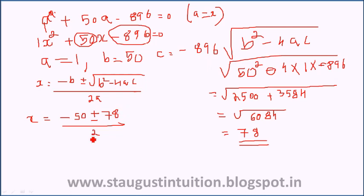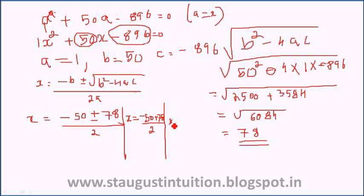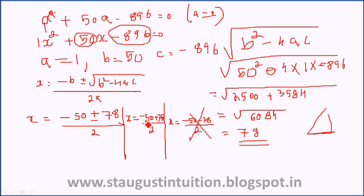We get two values. One is x equals minus 50 plus 78 divided by 2, which gives 28 divided by 2 equals 14. The negative value is rejected since a must be positive. So x equals a equals 14.